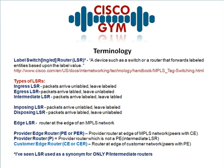The middle one is the provider router, or P router — sometimes also called a core router. This is a provider router that is not a PE; it's an intermediate LSR, meaning packets arrive labeled and leave labeled. These are the routers sitting in the middle of the provider cloud, not connecting to customers, just doing label switching — performing that swap operation over and over. So: ingress is push, egress is pop, and intermediates — the P routers — are swap.